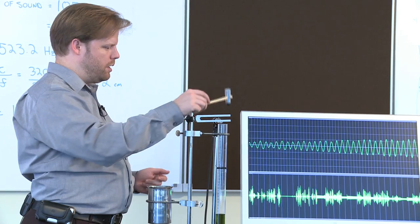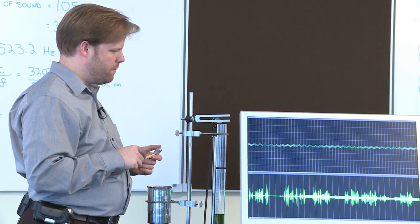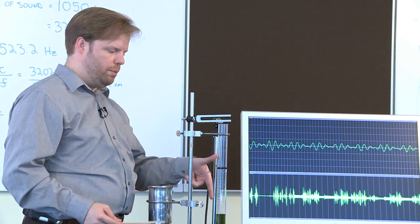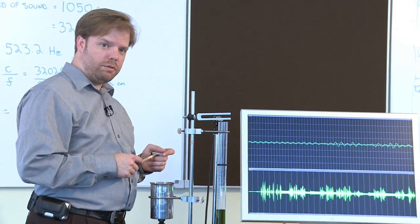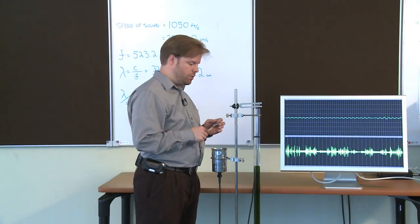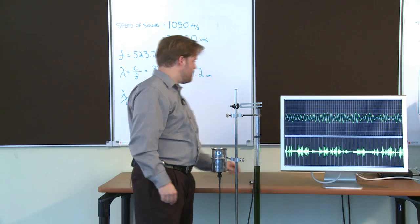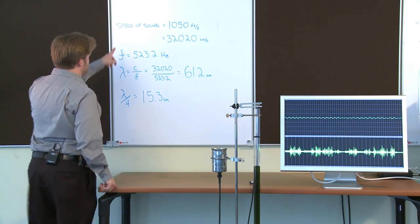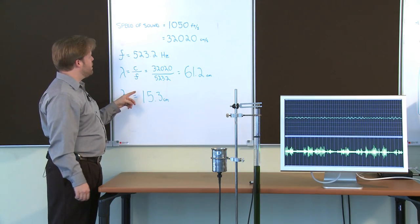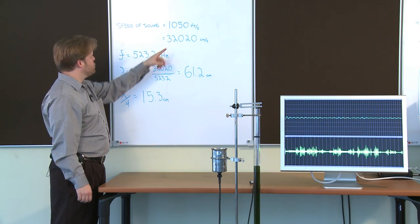But you can see the amplitude here is not very high. We can use the tube to resonate the frequency of the tuning fork in a way that will make the amplitude greater. We can calculate what that depth needs to be. Up here on the board I have the values we'll need to figure that out.